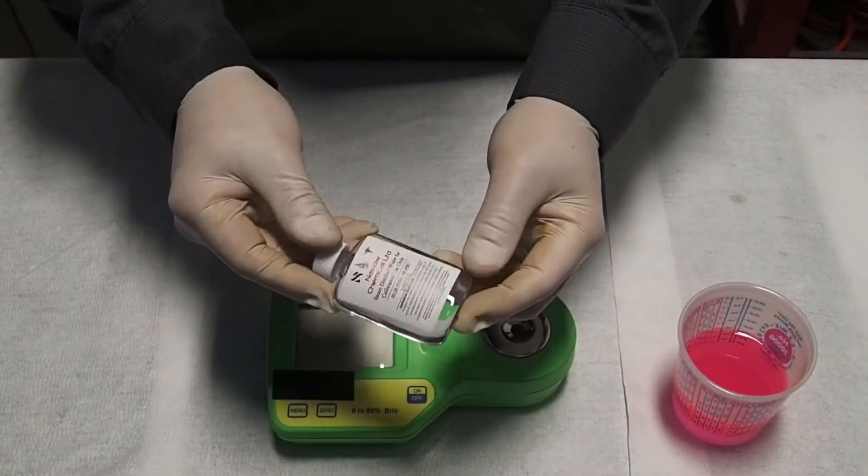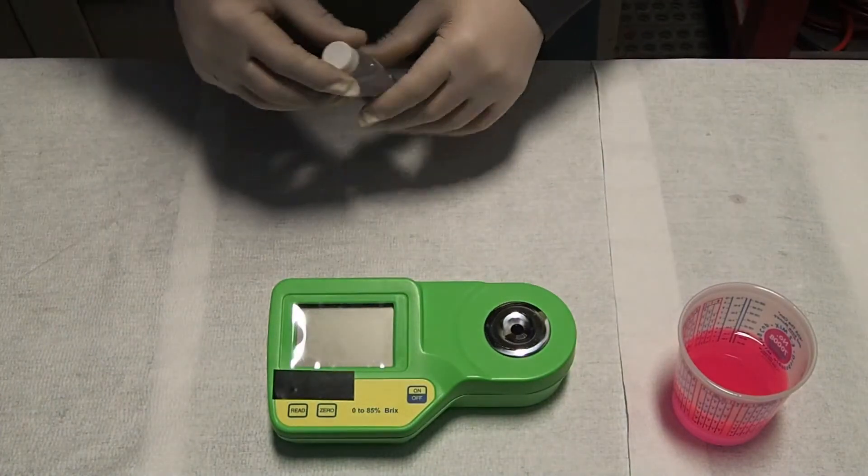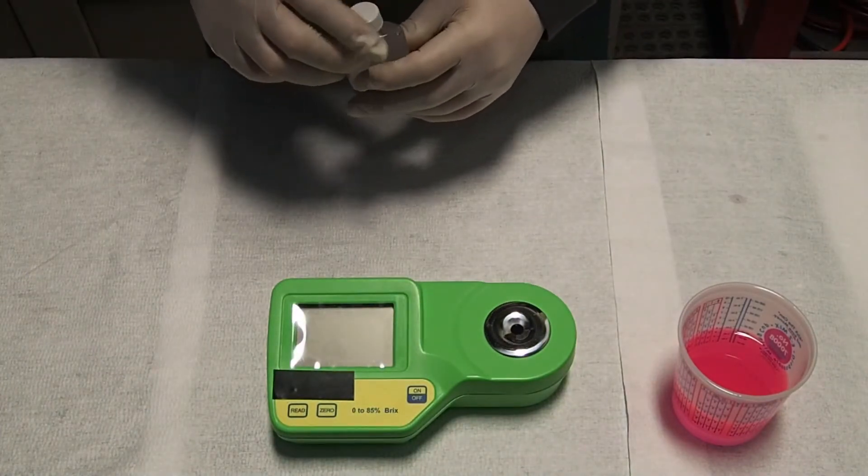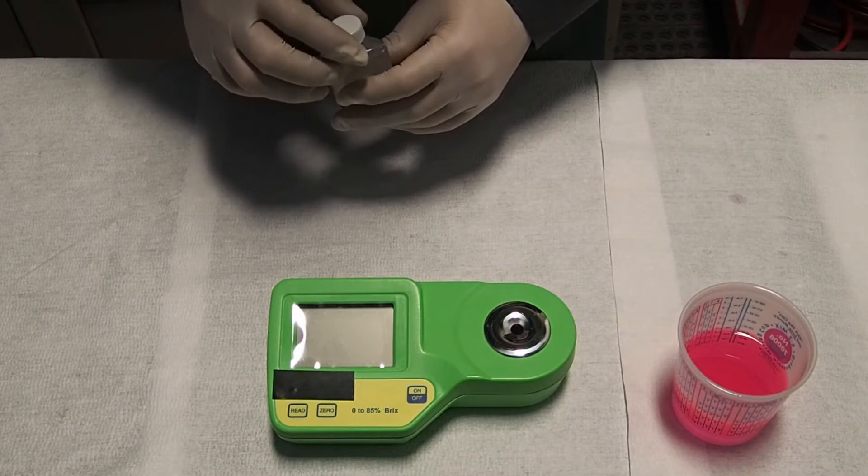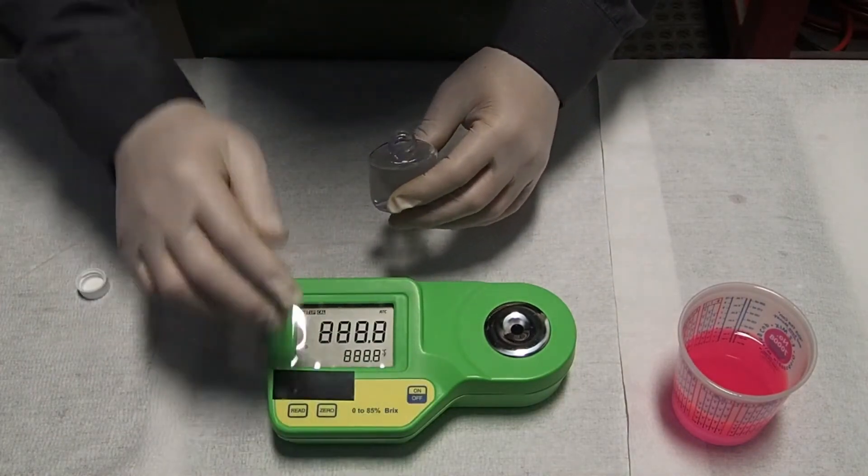To set up the zero point. This point is very important because it is the reference point used for the refractometer. Also, you can use deionized water to do this step. To run the device, the device will show us the power and the temperature because this device has automatic temperature compensation, or ATC.